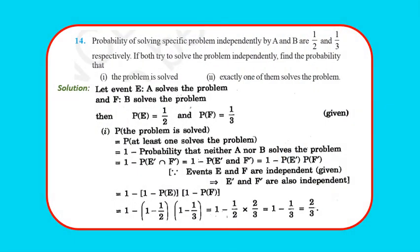Question 14: Probability of A and B solving a problem independently are 1/2 and 1/3. Find the probability the problem is solved. P(solved) = 1 - P(neither solves) = 1 - P(E')×P(F') = 1 - (1 - 1/2)(1 - 1/3) = 1 - 1/2 × 2/3 = 1 - 1/3 = 2/3.